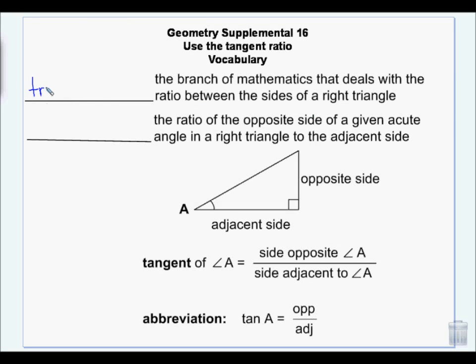Trigonometry. Trigonometry is the branch of math that deals with the ratio between the sides of a right triangle.